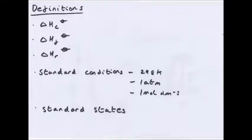Here are the key definitions you need to know. Enthalpy change of combustion is the enthalpy change that takes place when one mole of a substance reacts completely with oxygen under standard conditions — for example, completely combusting an alkane or alkene. Enthalpy change of formation of a compound is the enthalpy change that takes place when one mole of a compound is formed from its constituent elements in their standard states. Enthalpy change of reaction is the enthalpy change that accompanies a reaction in the molar quantities expressed in the chemical equation under standard conditions.